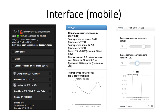Here you can see examples of the mobile interface. The interface is fully customizable — it can be dark or light, and it supports different languages. In this case examples are shown in English and Russian. There can be buttons, switches, custom HTML widgets, video streaming from security cameras, and more.